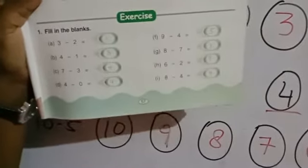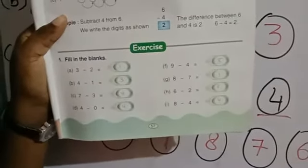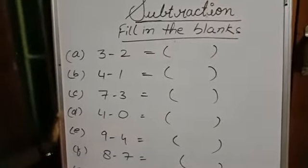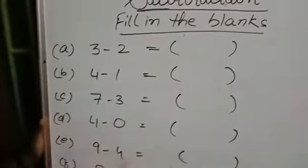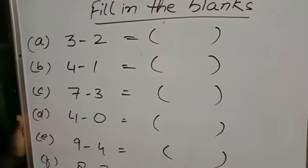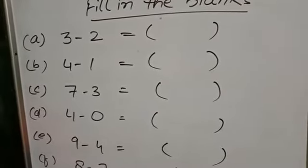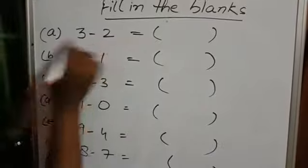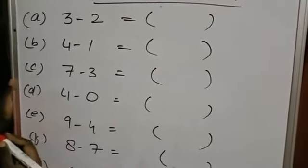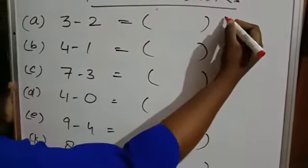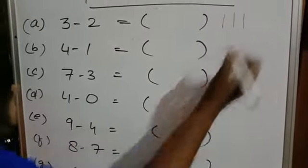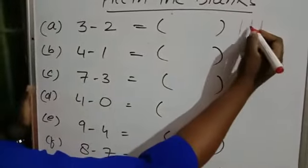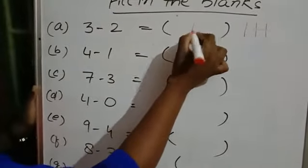Now we will do the next exercise — that is fill in the blanks. In this, we have to do subtraction. First: 3 minus 2. You have to draw 3 lines, then cut 2 lines. How many lines are left? Only 1. That means 3 minus 2, you are getting 1.